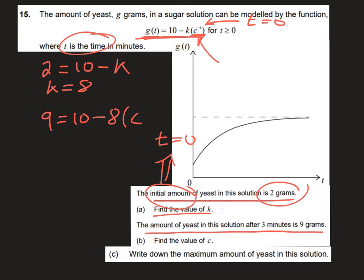So 9 = 10 - 8·c^(-3). We now are going to solve this equation for c. If we rearrange it, we take 8c^(-3) to one side and the 9 to the other: 10 - 9 = 1, so 8c^(-3) = 1.